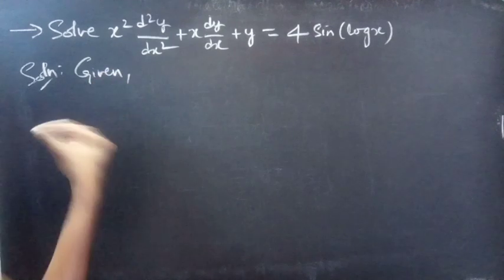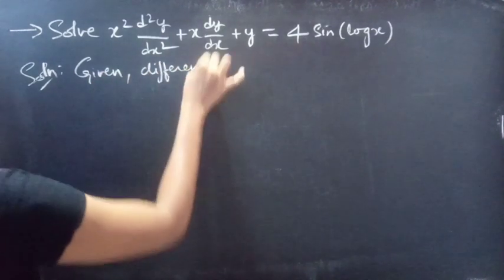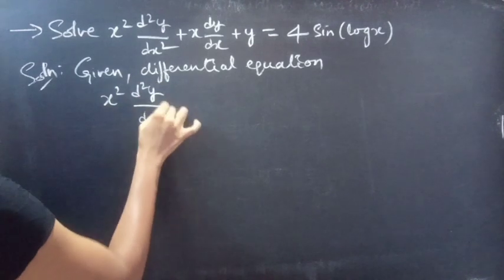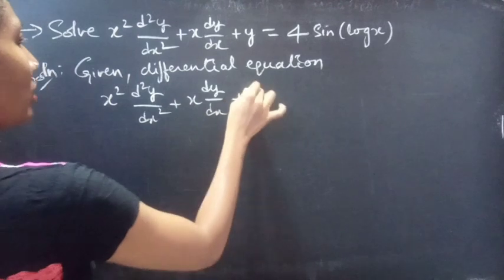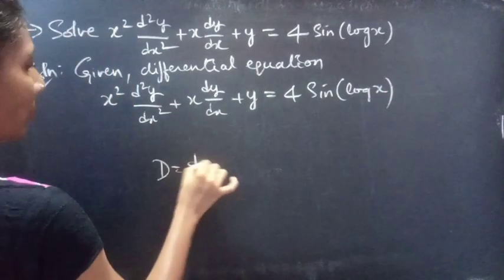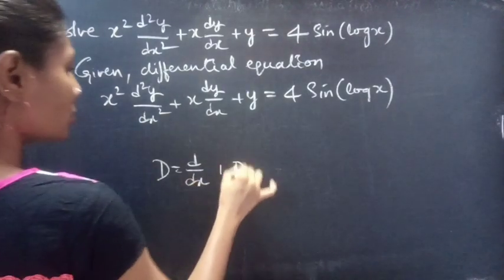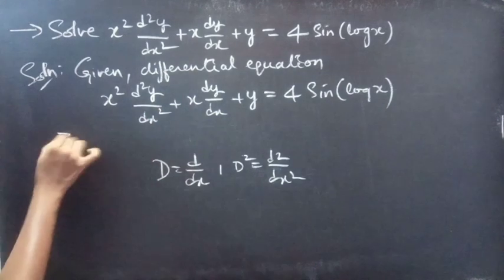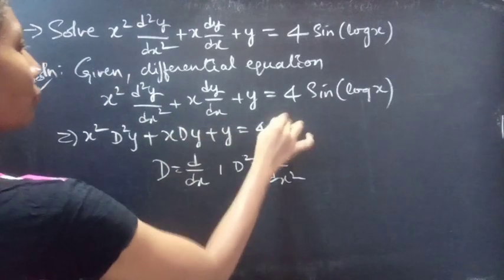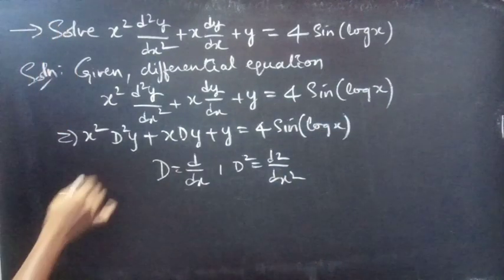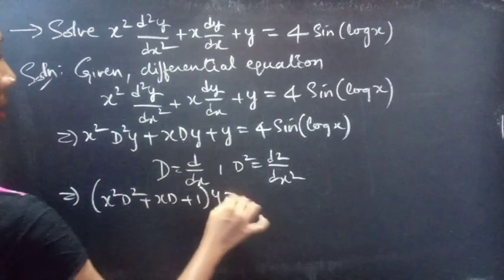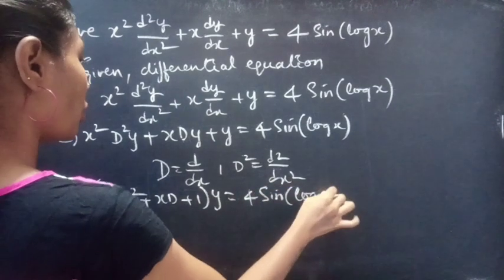Let's begin with the given differential equation: x squared d squared y by dx squared plus x dy by dx plus y equals to 4 sin(log x). We can rewrite this as x squared d squared y plus x dy plus y equals to 4 sin(log x). Taking y common from all three LHS terms gives us (x squared d squared plus x d plus 1) into y equals to 4 sin(log x), which is Cauchy's equation.